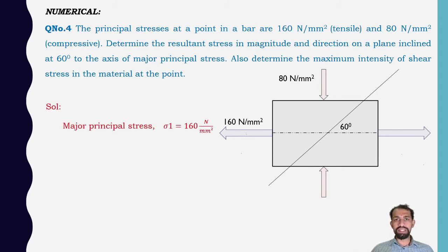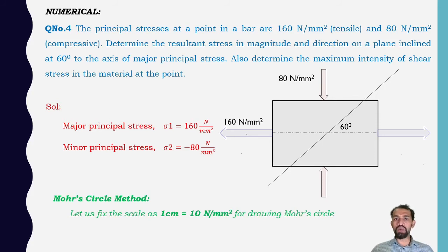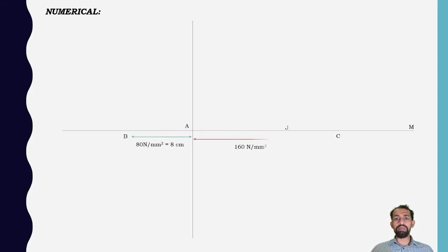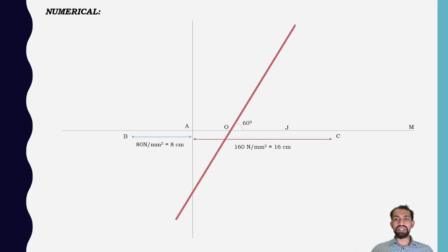Solution: major principal stress sigma1 = 160 N/mm², minor principal stress sigma2 = −80 N/mm² (negative, compressive). Using the Mohr circle method with scale 1 cm = 10 N/mm²: draw vertical and horizontal lines with junction at A and end point M. Point C is at 16 cm (160 N/mm²) on the right, and point B is at 8 cm (80 N/mm²) on the left. Point O is the center of B and C. We draw the 60° plane from the center O.